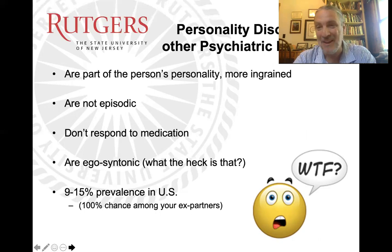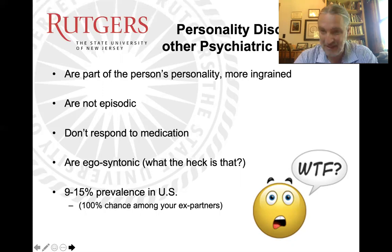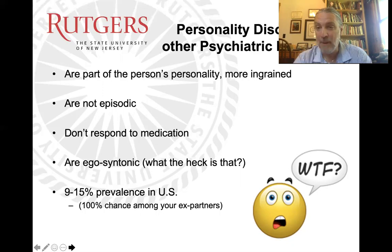Personality disorders are also egosyntonic. What that really means is that the symptoms are okay with the person — they like the way they are, this is part of who they are. Most people would identify depression and anxiety as ego dystonic, meaning I don't like the way I feel, I want to change. If it's egosyntonic, the problem isn't with the person; it's with everybody else. Personality disorders are very prevalent, with a 9% to 15% prevalence in the United States. That number goes up for certain types, or if you work in mental health or inpatient settings.